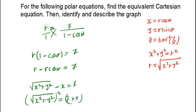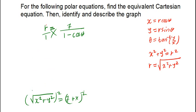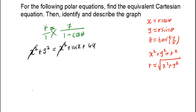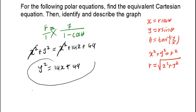Adding x to both sides gives √(x² + y²) = 7 + x. Squaring both sides to eliminate the square root: x² + y² = (7 + x)². Expanding the right side gives x² + 14x + 49. The x² terms cancel, leaving y² = 14x + 49. This is already an equation of a parabola — a parabolic equation.